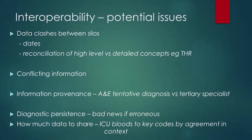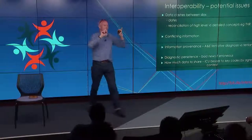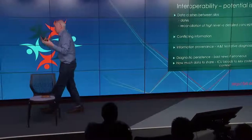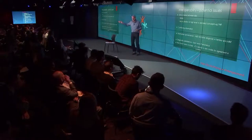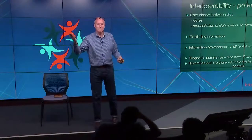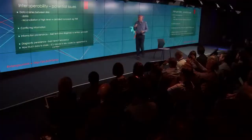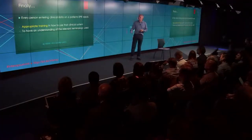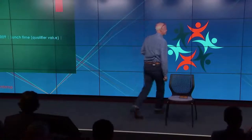Record curation: back in the late 90s, secondary care loved our summaries coming through. Now they're full of absolute crap — computer readable but not human readable. Once a summary is tidied up, people have to curate records and learn to do it if you're going to develop safe care. On interoperability: potential issues include data clashes between silos, conflicting information from different sources, different dates on events, and information provenance. Daily I get patients saying things like 'I've never had an intracerebral bleed' — a tentative A&E diagnosis had gone along the electronic system into ours. Every person entering clinical data on an EPR needs appropriate training in how to use their system and an understanding of that system.